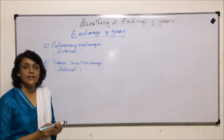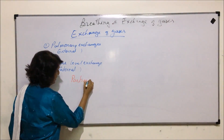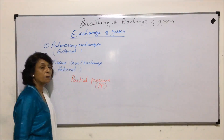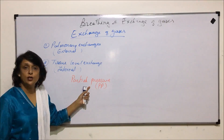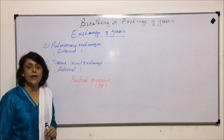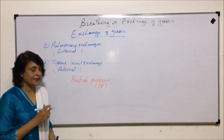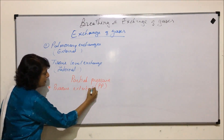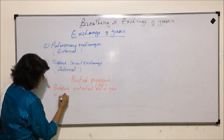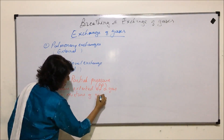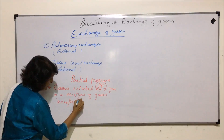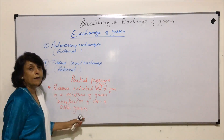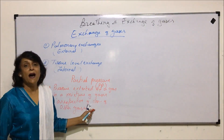Before we take up the exchange of gases, we need to understand a term called partial pressure. Partial pressure is expressed by the abbreviation PP and it is defined as the pressure exerted by a gas in a mixture of gases, irrespective of the concentration of other gases. So every gas in a mixture, that is in air, is going to have some partial pressure.